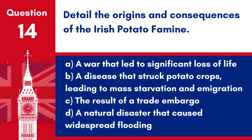Question 14: Detail the origins and consequences of the Irish potato famine. a. A war that led to significant loss of life. b. A disease that struck potato crops, leading to mass starvation and emigration. c. The result of a trade embargo. d. A natural disaster that caused widespread flooding. Answer: b. A disease that struck potato crops, leading to mass starvation and emigration. The Irish potato famine of the mid-19th century had devastating effects on Ireland, causing widespread suffering and leading to a significant decrease in the population through death and emigration.